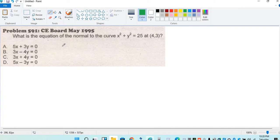Slope of the curve is equal to the derivative of y with respect to x. In differential calculus, therefore, derivative ng x squared ay 2x plus, derivative ng y squared ay 2y y prime. Anong derivative ng 25 is 0.